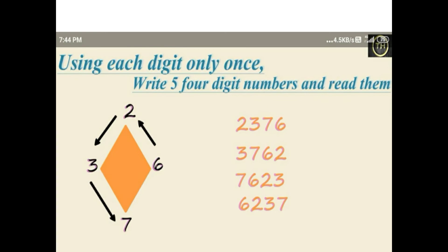Using each digit only once, write five four digit numbers and read them. Look at the picture — this is a diamond shape with four points and four numbers. You can arrange the numbers. The digits are two, three, seven, six. What is the place value of two? Thousand place. Place of three? Hundred place. Place of seven? Tens place. Place of six? Ones place. How to read? Two thousand three hundred and seventy six.